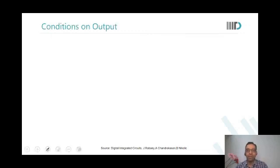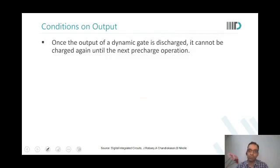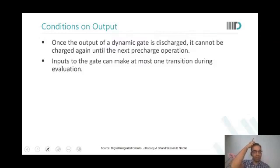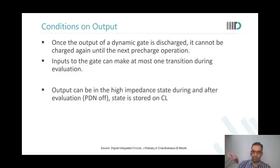There are few conditions on the output. Once the output of a gate is discharged, it cannot be charged again. The inputs to the gate can make at most one transition during an evaluation. Glitches are absolutely unacceptable in dynamic gates. If the glitch is very small, the output may reduce but may not go to zero directly.